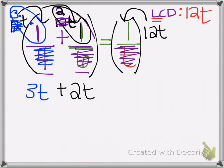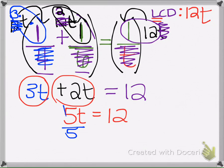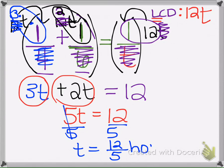And then here, t goes into t once and we're just left with one and twelve, so one times twelve is twelve. And then we're going to go ahead and combine the like terms, divide by five, and we get that the time it takes both is twelve fifths hours.